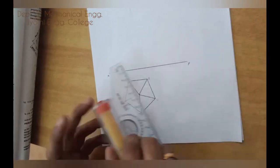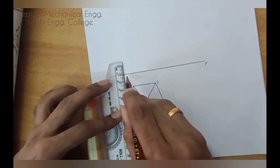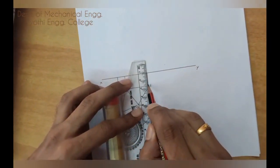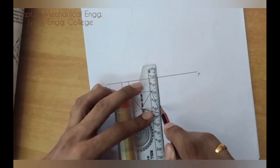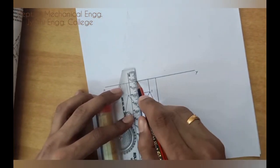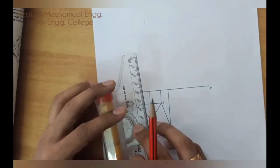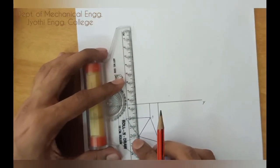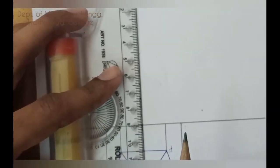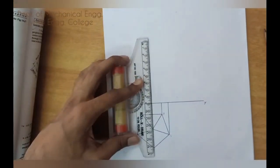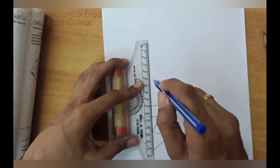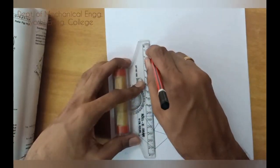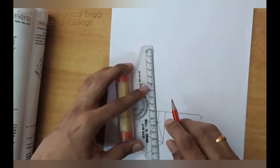Now project it upwards. The question is given that the height of the axis is 90mm, so from XY line take 90mm and then complete the figure.